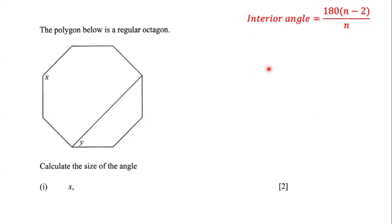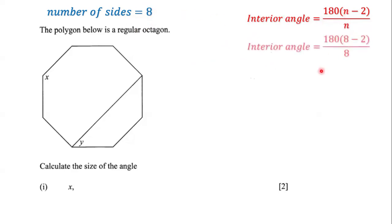Now, what is n? Well, n is equal to the number of sides. The number of sides of this regular octagon is equal to 8. So wherever we see n, we're going to put 8. That gives us 180 multiplied by 8 minus 2, all over 8.